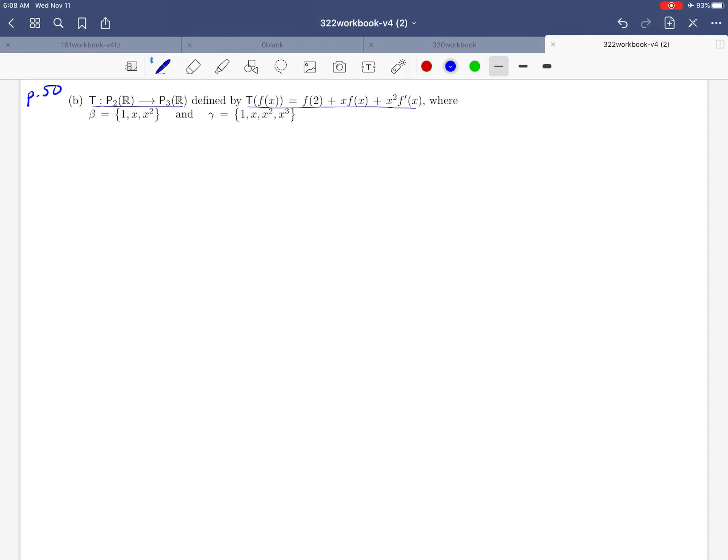So the process is going to be the same here. We're going to start by taking the basis that's going with our inputs, and that's this beta. We'll substitute those vectors in one at a time into our transformation. So starting with T of 1, then T of x, and then finally T of x squared.